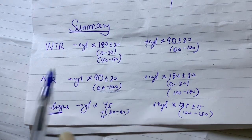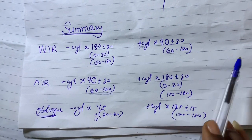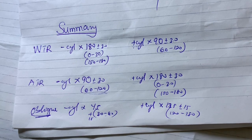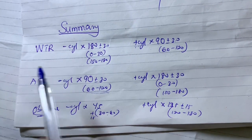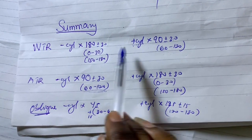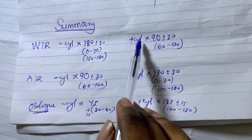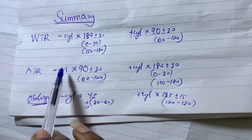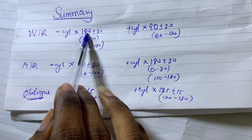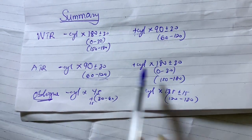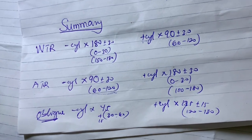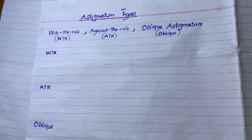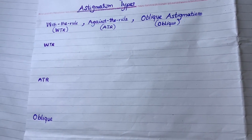For oblique astigmatism, the axis lies at 45 plus or minus 15, so between 30 and 60 for minus cylinder. The key point is to be able to classify prescriptions given in either plus or minus cylinder form. Always keep these forms in mind: minus cylinder with-the-rule is around axis 180, while against-the-rule is around axis 90.